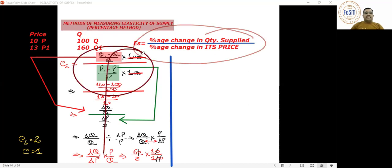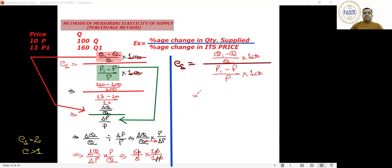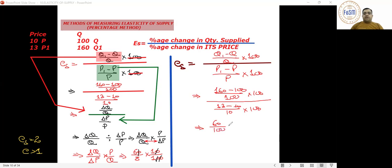Now let me show another meaningful explanation of the same formula. Elasticity of supply equals: Q1 minus Q, whole divided by Q into 100, divided by P1 minus P upon P into 100. That is: 160 minus 100 upon 100 multiplied by 100, divided by 13 minus 10 upon 10 multiplied by 100.